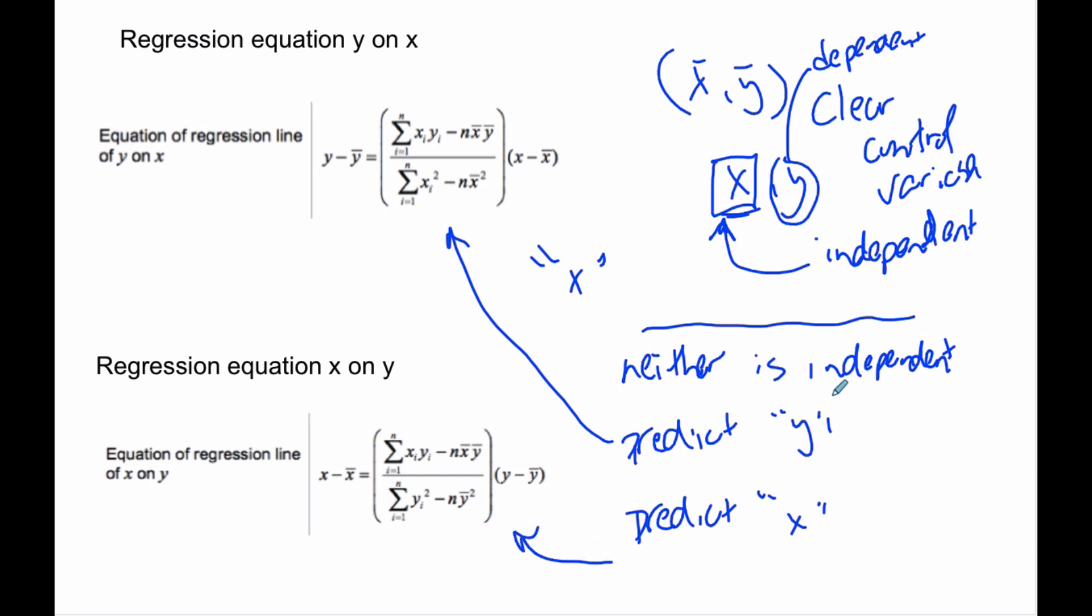If there's no clear control variable, then we can make either X and Y, and so we make this X like our Y value. And so we make Y will be the dependent, and X would be, we would switch them around, basically. We make this the one that we're going to try to predict from. And so there's really only one scenario where you're going to use X on Y, and that's when there's no clear relationship between which is dependent and independent, and we wish to predict the X values.